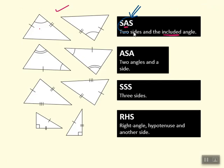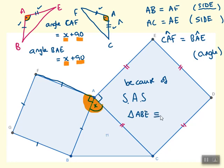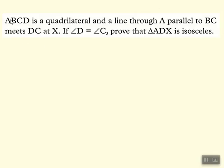We have one side matching, one angle matching, and another side matching — with the angle between the two sides. Therefore, because of side-angle-side, triangle ABE is congruent to triangle ACF. There's a tiny bit of algebra involved, but it's really no more than applying side-angle-side.